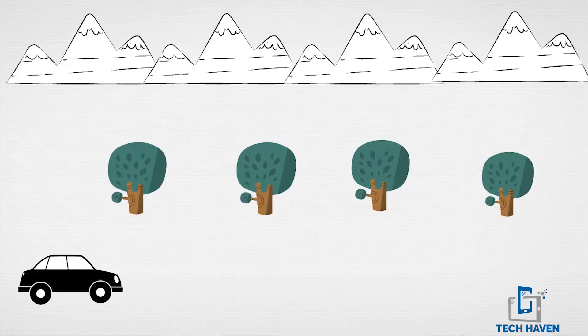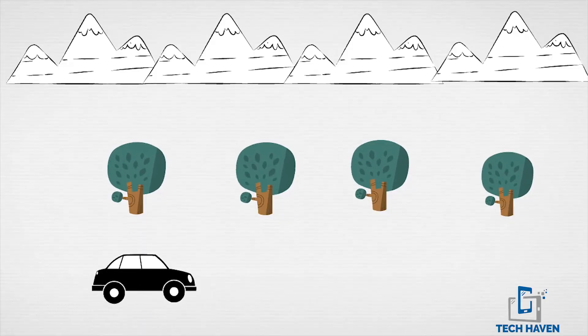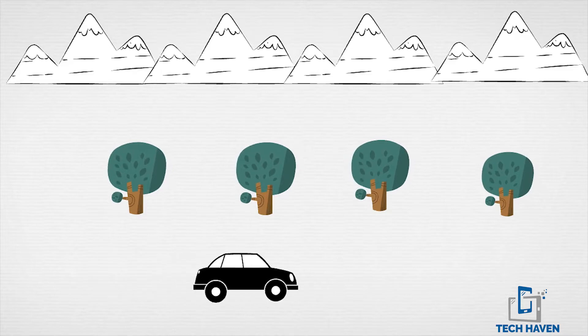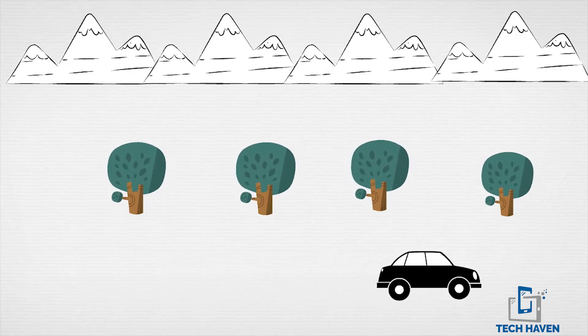So how does Portrait Mode work? A lot of phones use different methods to produce this effect, but today I'm going to be talking about how dual camera phones do this with their two cameras. We have to go back to high school to explain some terms. Imagine yourself being in a car traveling a long distance journey. Now imagine looking at mountains far off to one side and then imagine trees planted by the side of the road, like what is being shown in the video.